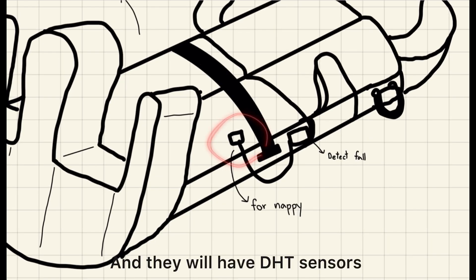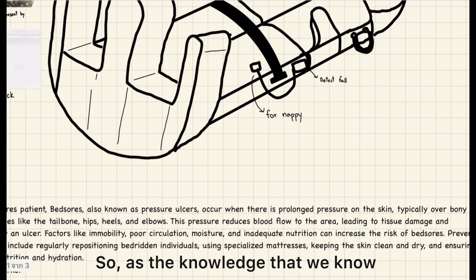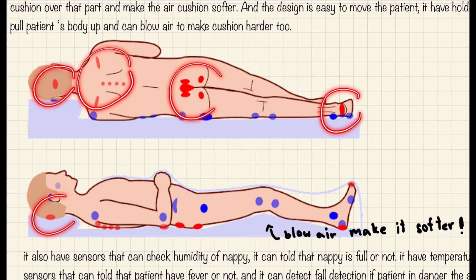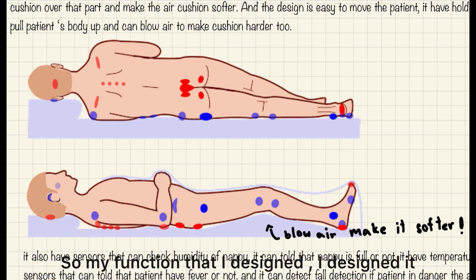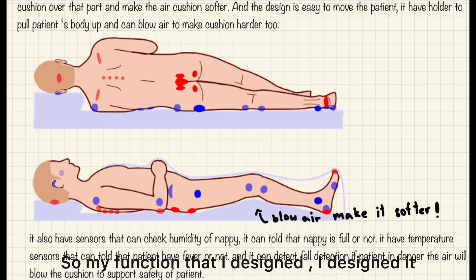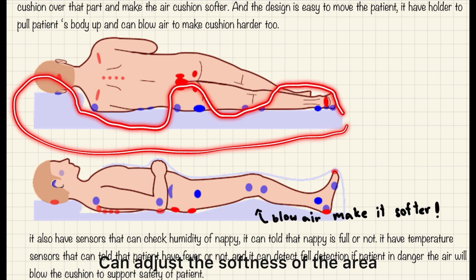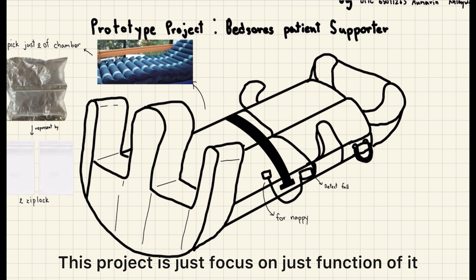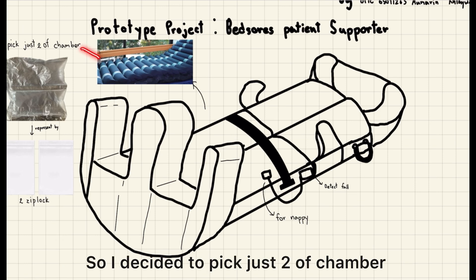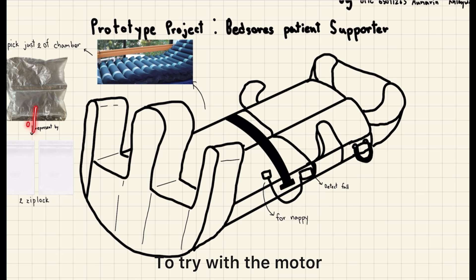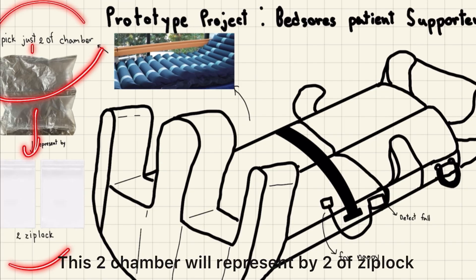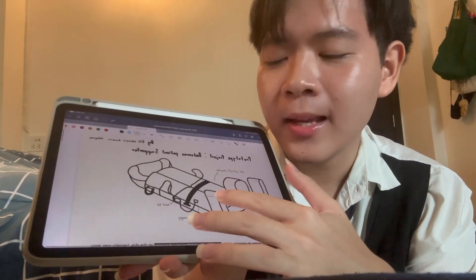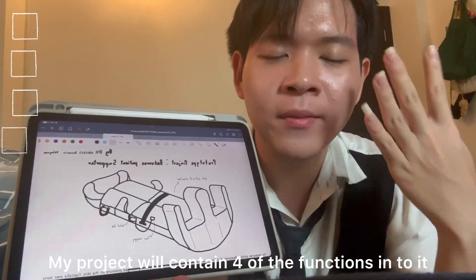It will also have a DHT sensor to detect the humidity of the nappy. As we know, the patient will have areas that have problems. My functions are designed to access the pressure sore area. For this project prototype I focused on just the core functions, using two chambers to try with the motor. These two chambers will represent my two zip locks. My project will contain four functions.